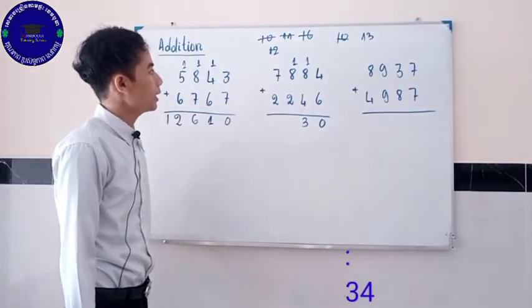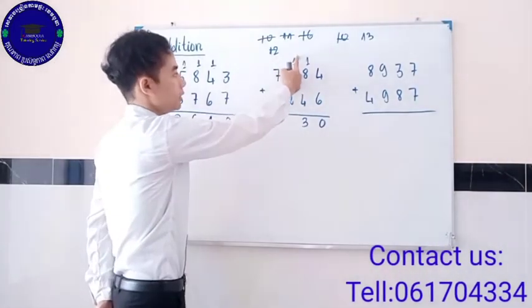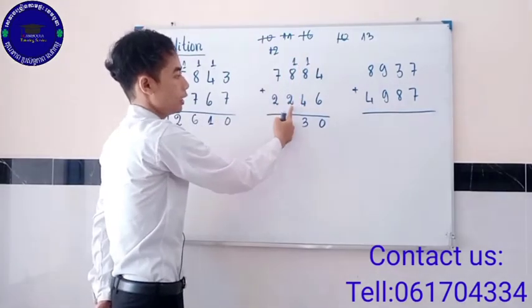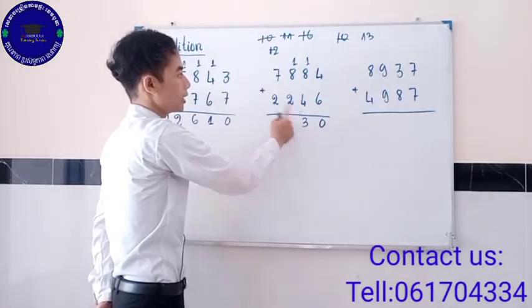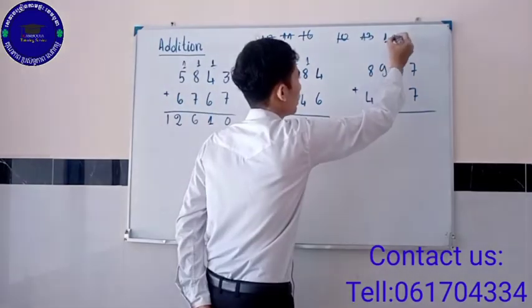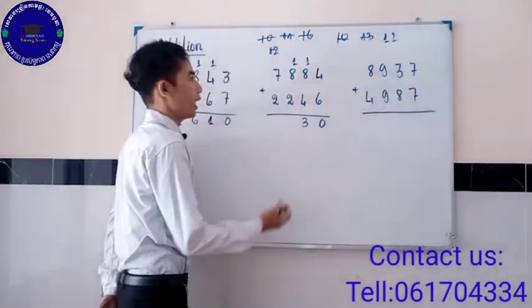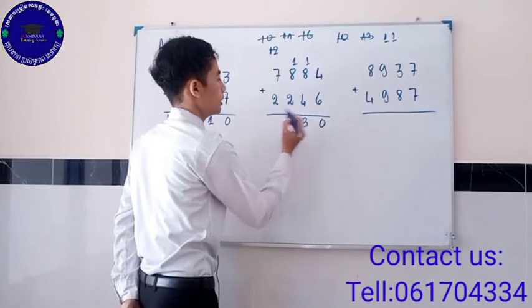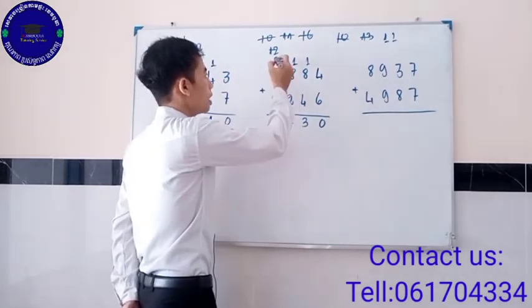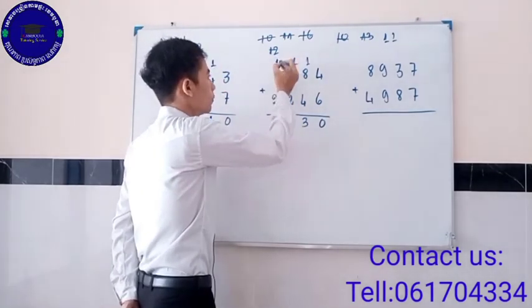Then, when we add 1 and 8 and 2, we get 11. So, we write 1 and carry the 1 above 7.